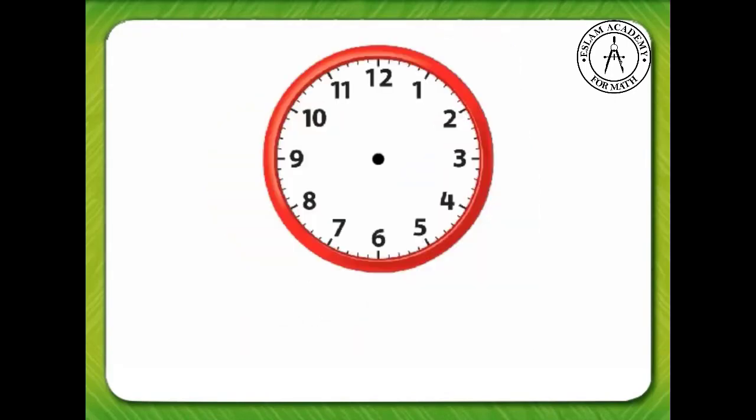Now we are going to draw the hands on this clock to show 9 o'clock. Let's draw a red hand, which is short, as our hour hand. The hour is 9, so let's have the red hand point to 9.